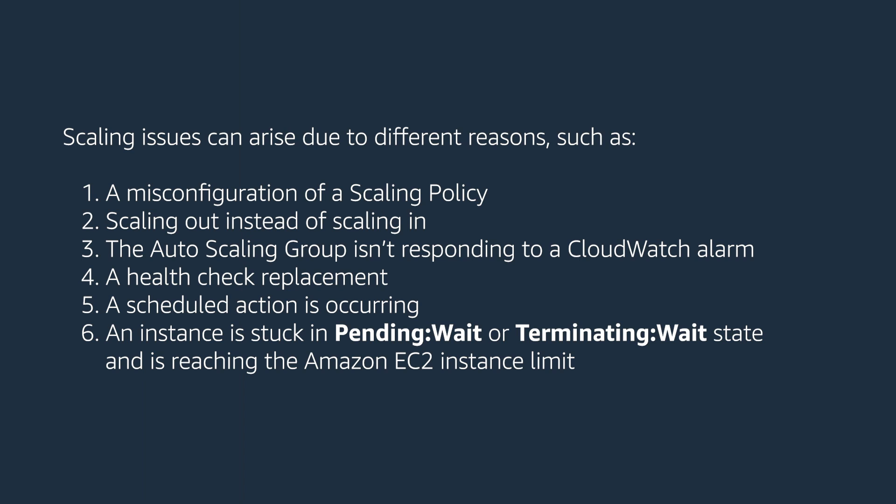Scaling issues can arise due to different reasons, such as a misconfiguration of a scaling policy, scaling out instead of scaling in, the auto scaling group isn't responding to a CloudWatch alarm, a health check replacement, or a scheduled action is occurring, or an instance is stuck in pending wait or terminating wait state and is reaching the Amazon EC2 instance limit. Let's look at each scenario and perform the following checks based on auto scaling configurations.